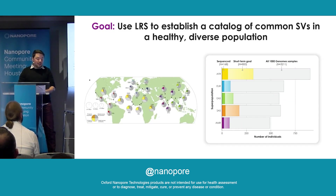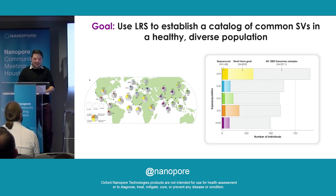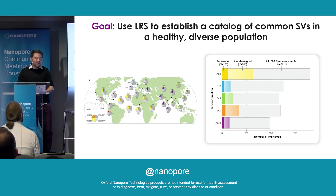So far, we have sequenced, aligned, and assembled 168 of the samples from the Thousand Genomes Project, and these are all actually available online on AWS — I will have a QR code to link to that at the end of the talk. Our short-term goal is to sequence around 800 of the Thousand Genomes samples, and ultimately we would love to do the entire cohort of 3,200.